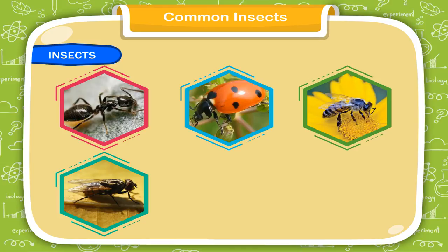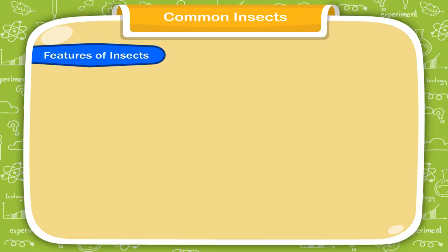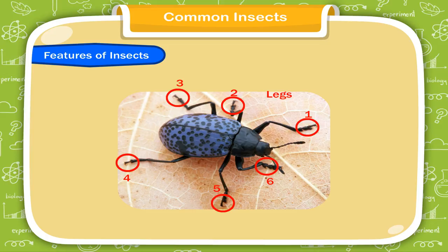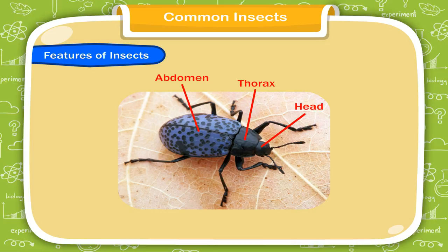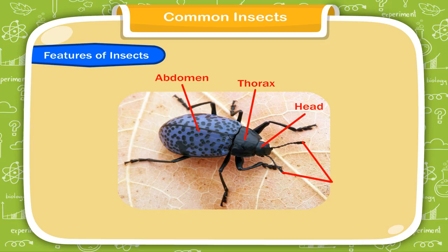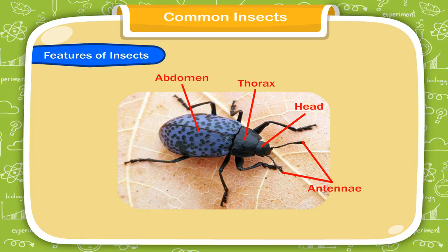Features of Insects. Some common features of an insect are: an insect has six legs. Its body is divided into three parts — head, thorax, and abdomen. It has a pair of antennae to sense and feel the things around. It has a hard external covering made of something called chitin.